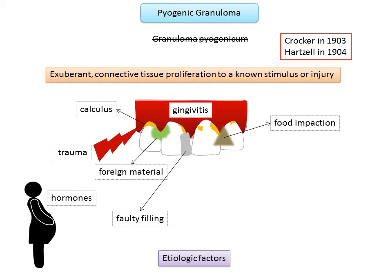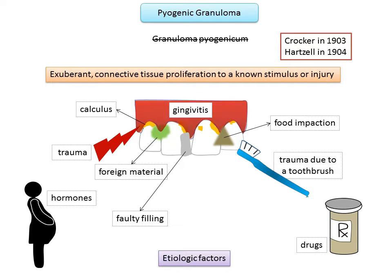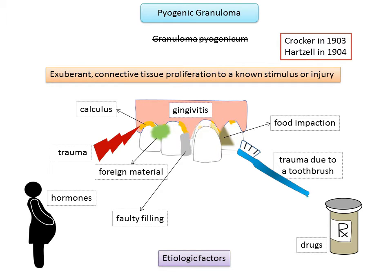Other etiologic factors include faulty fillings and overhanging restorations, food impaction in the interdental region, increased levels of progesterone and estrogen during pregnancy, drugs such as oral contraceptives, retinoids, gefitinib, and MEK inhibitors, trauma caused by overzealous brushing, chronic irritation related to exfoliation of deciduous teeth, and eruption of permanent teeth.